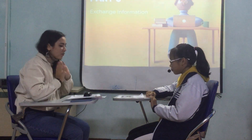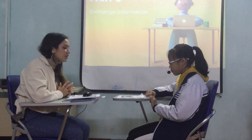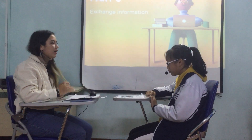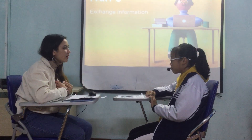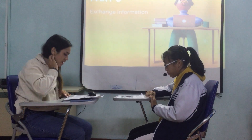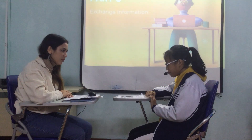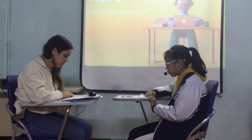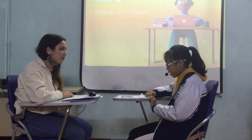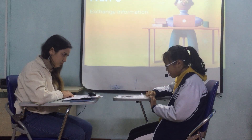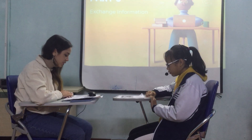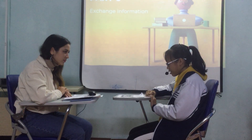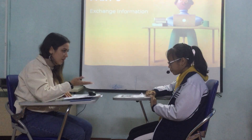Now we need to exchange information. You have the information about data school and I have the information about data school. I will ask you the questions and you will answer, then you will ask me and I will answer. What is the name of Betty's school? It's named Park School. Where is the school located? The school is near the post office. How many children are there in the school? There are five hundred students. And what sport does Betty play? Betty plays tennis.